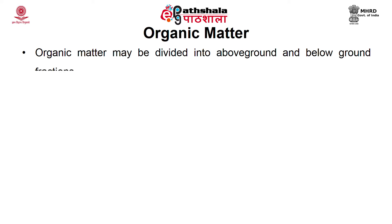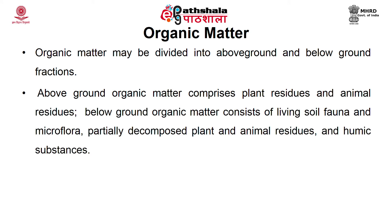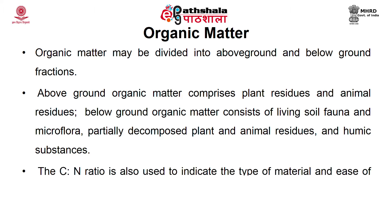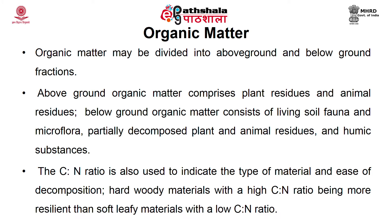For practical purposes, organic matter may be divided into above-ground and below-ground fractions. Above-ground organic matter comprises plant residues and animal residues. Below-ground organic matter consists of living soil fauna and microflora, partially decomposed plant and animal residues, and humic substances. The carbon-to-nitrogen ratio is used to indicate the type of material and ease of decomposition — hard woody material with a high C:N ratio is more resilient than soft leafy material with a low C:N ratio.